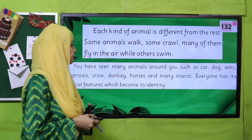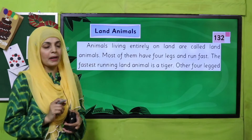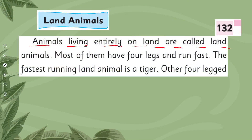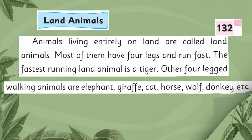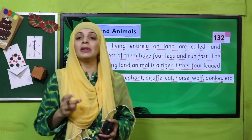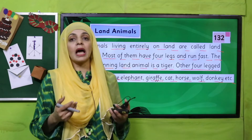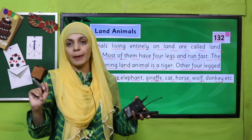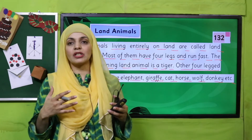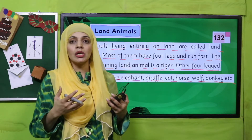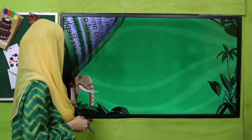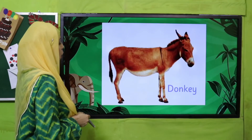Animals living entirely on land are called land animals. Most of them have four legs and run fast. The fastest running land animal is a tiger. Other four-legged walking animals are elephant, giraffe, cat, horse, wolf, donkey, etc. So my dear students, animals that completely live on land are called land animals. They have legs and run on them. Four-legged animals include elephant, tiger, dog, cat, goat, donkey, and horse.